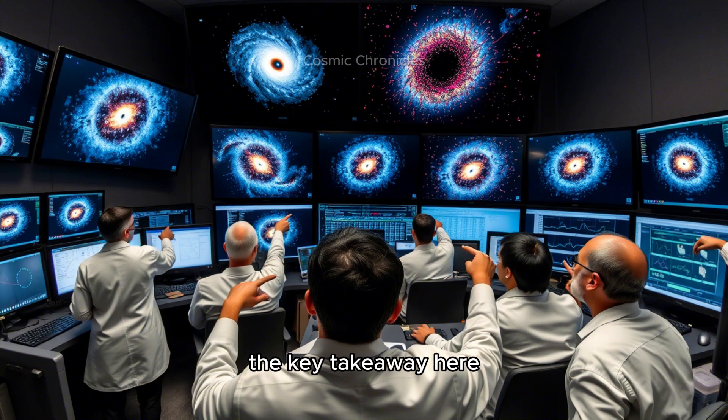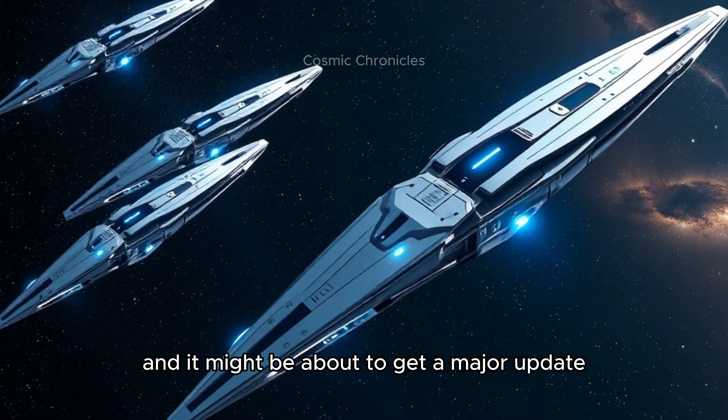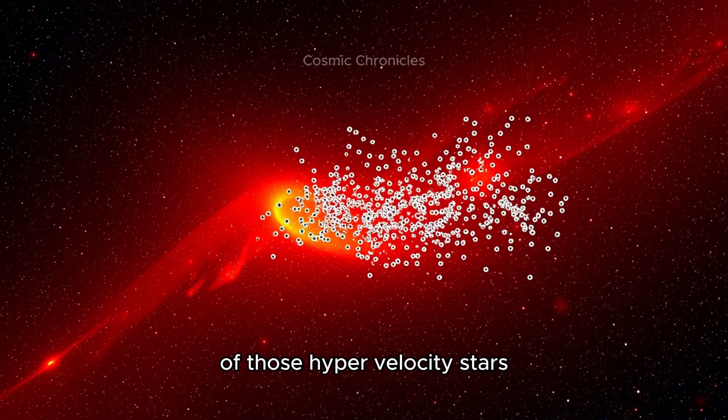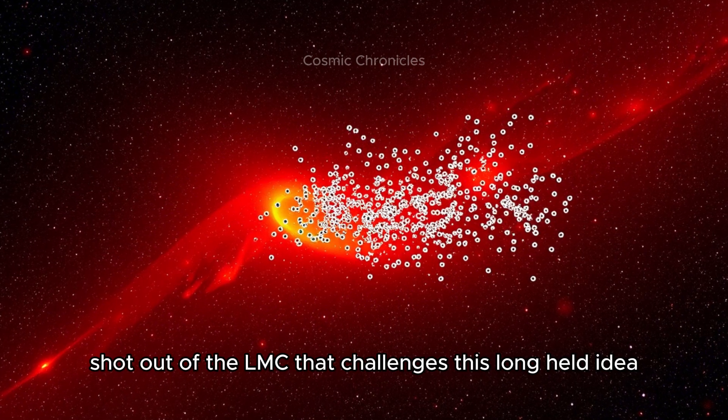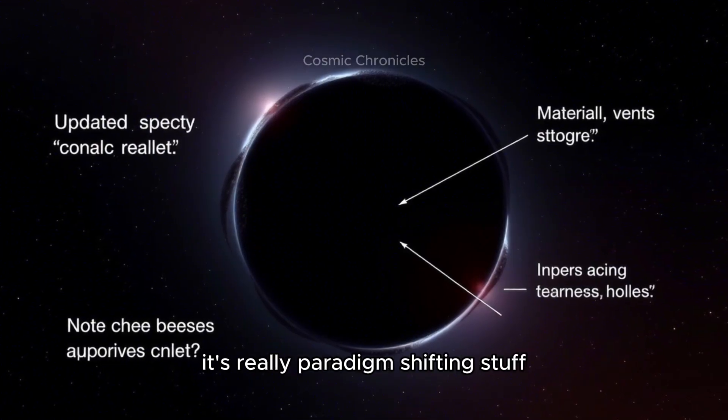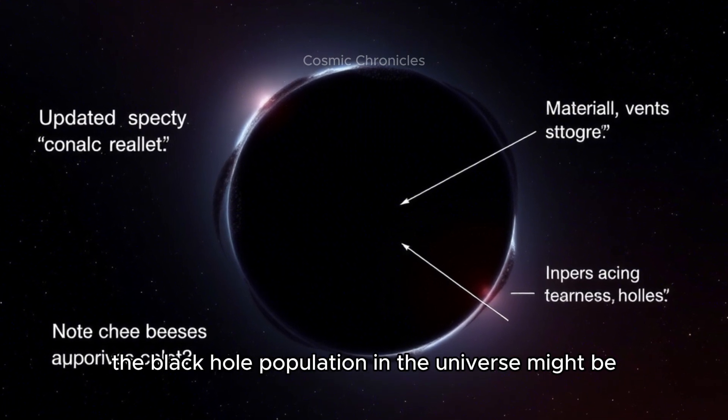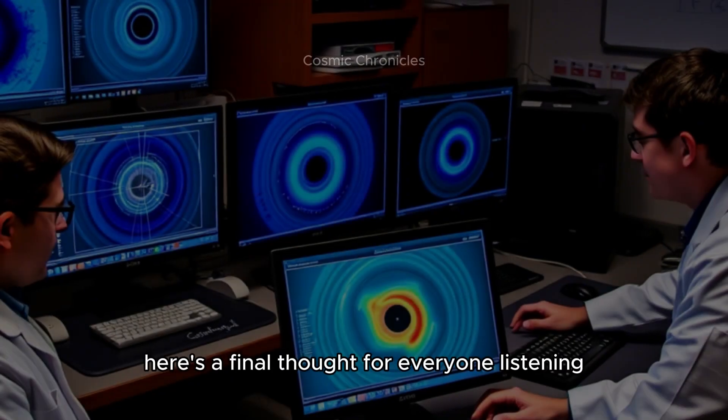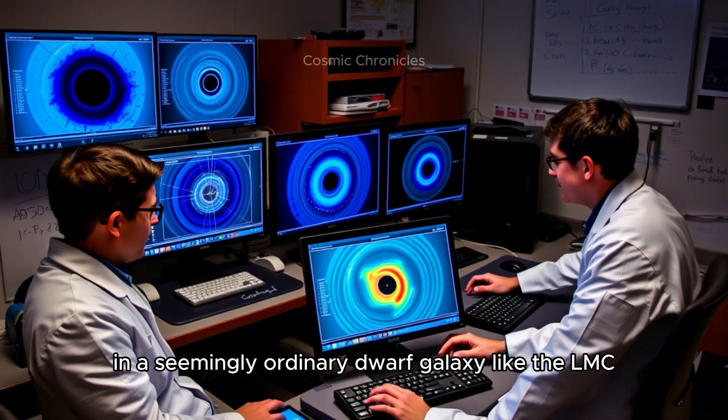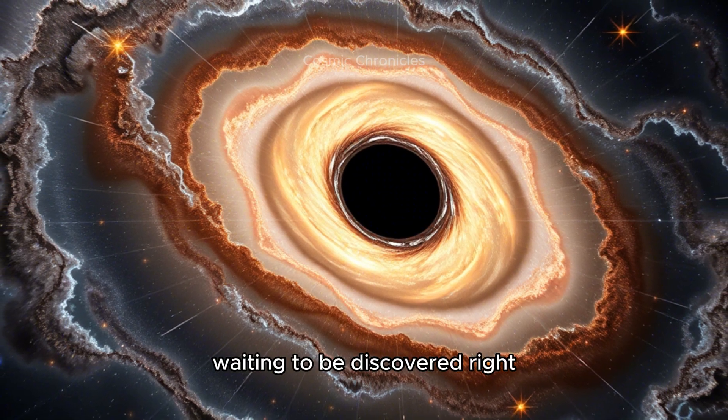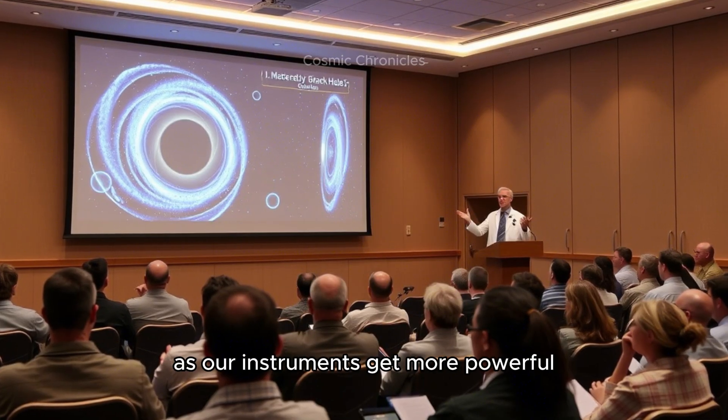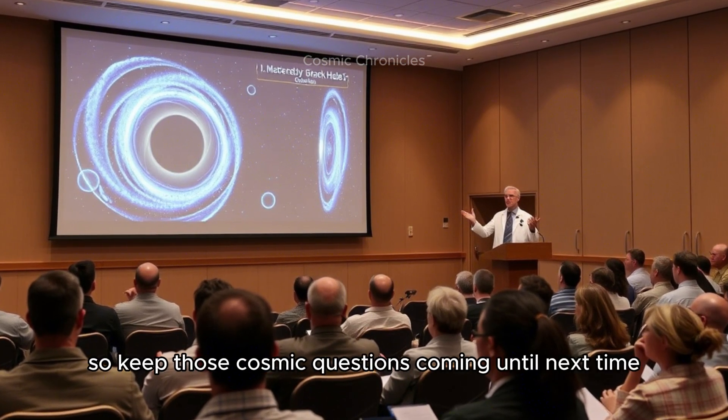Just to do a quick recap, the key takeaway here is that our understanding of supermassive black holes might be about to get a major update. We have this really compelling evidence suggesting there's one in the LMC, our little galactic neighbor. This evidence comes from the paths of those hypervelocity stars that seem to have been shot out of the LMC. It challenges this long-held idea that supermassive black holes only hang out in the biggest, most massive galaxies. Here's a final thought for everyone listening: if we can find a potential supermassive black hole in a seemingly ordinary dwarf galaxy like the LMC, what other surprises are out there waiting to be discovered in all those countless dwarf galaxies scattered throughout the universe? Keep those cosmic questions coming. Until next time.